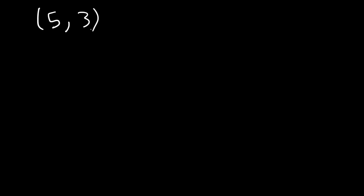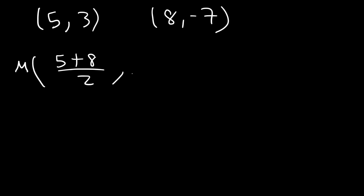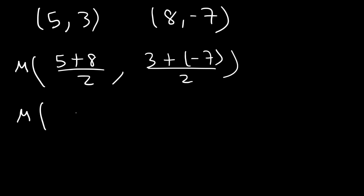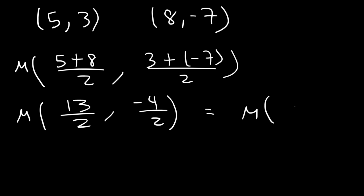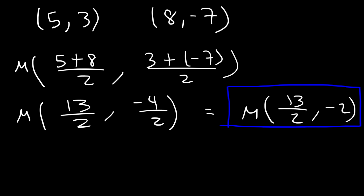Go ahead and try this one: find the midpoint between (5, 3) and (8, -7). So x1 is 5, x2 is 8, y1 is 3, y2 is -7. Now 5 plus 8 is 13, and 3 plus negative 7 is -4. Negative 4 divided by 2 is -2. We can't reduce 13 over 2, so we leave it as a fraction. The answer is (13/2, -2).